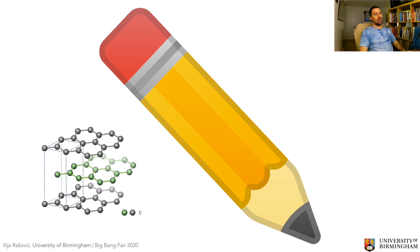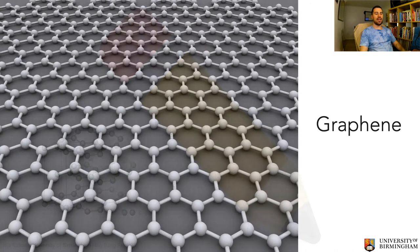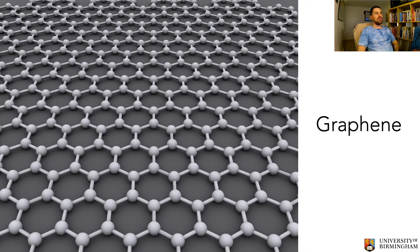When you write with graphite, these layers rub off onto the sheet of paper. Those individual layers of graphite are themselves very interesting — you may have heard of graphene. Graphene is a single layer of graphite, so it is only one atom thick. This is a kind of introduction to a whole new exotic world of materials — the nanoworld. This is a nanomaterial, and it's the first of the carbon nanomaterials I'm going to introduce today.